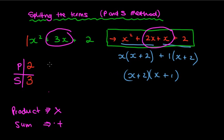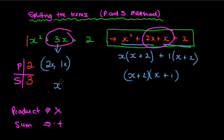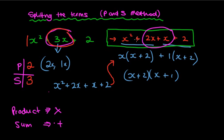Since 2 is a prime number, the only two factors are 2 and 1. If we add them, 2 plus 1 makes 3 — so both are positive. Once we have our two numbers, we split 3x up into 2x and 1x, giving x squared plus 2x plus 1x plus 2. Then we factorise in pairs to get x plus 2 times x plus 1. It doesn't matter which order you put them — 1x and 2x — it will still work out the same.